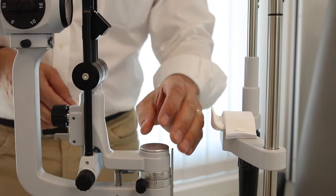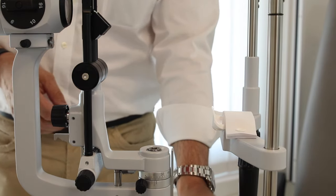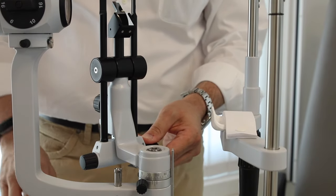This is a CI device on a slit lamp. In the first step we take off this metal protector, then we create a little bit more space.